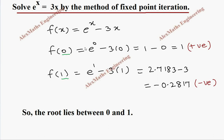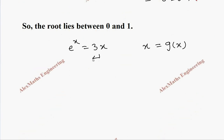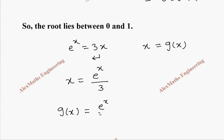We can say the root lies between 0 and 1. Now we take the function e^x = 3x and write it in terms of x itself, that is x = g(x). For this we take 3 to the other side, so x = e^x / 3. Thus g(x) = e^x / 3.